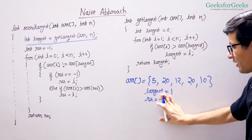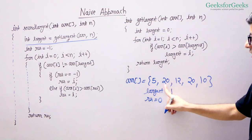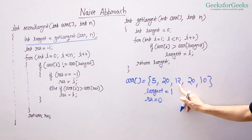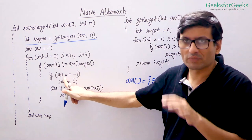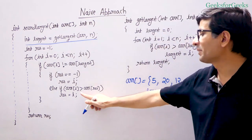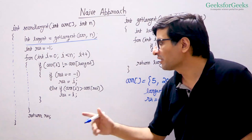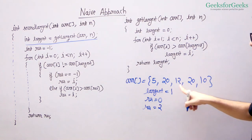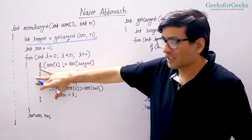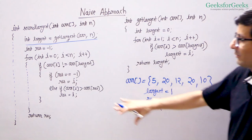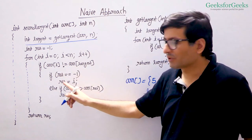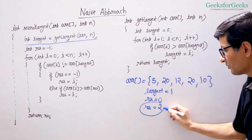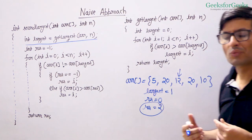After finding largest at index 1, we traverse the array with result initialized to minus 1. At index 0, the element 5 is not equal to the largest, so we update result to 0. At index 1, the element is the largest, so we ignore it. At index 2, element 12 is not equal to largest and result is not minus 1, so we compare: 12 is greater than array[result] which is 5, so we update result to 2. At index 3, element 20 equals the largest, so it is ignored. At index 4, element 10 enters the condition but is not greater than 12, so result remains 2 — the index of element 12, which is the correct answer.